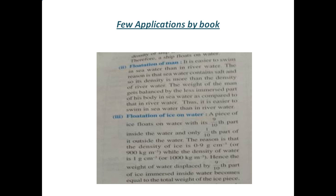One thing I want to mention: I think somewhere in this chapter the density of ice is given as 0.09, which is not correct. The density of ice is 0.9. Here in this paragraph it is correctly written as 0.9 gram per centimeter cube, but I think in the paragraph of iceberg it is given as 0.09. So we are clear about the correct density value. These are the applications from the book, and in my next slide I have given a few more examples.